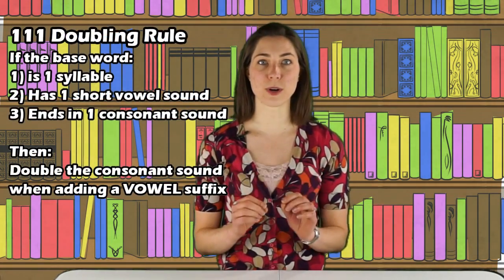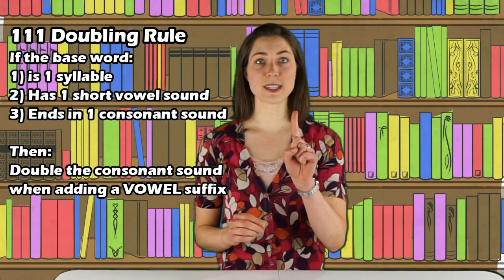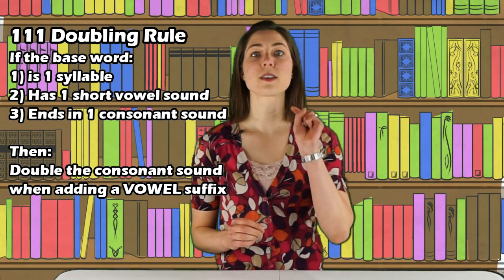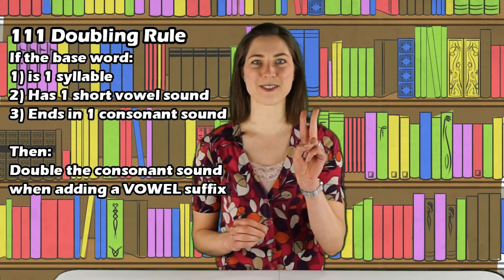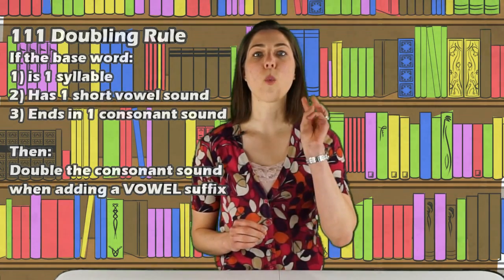This rule explains when you need to double the consonant when you're adding a suffix. Here's the rule: if your base word is one syllable, has one short vowel sound, and ends in one consonant, you double the consonant if you're adding a vowel suffix. Key things here: one syllable word, one vowel, and one consonant at the end. This only applies to suffixes that begin with a vowel.